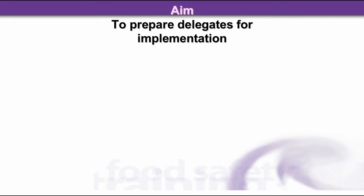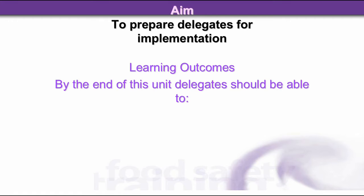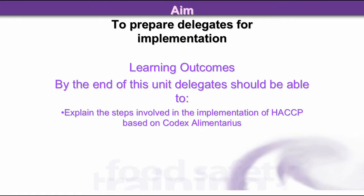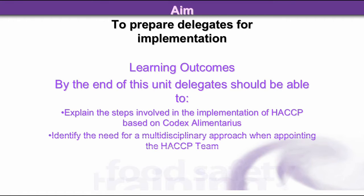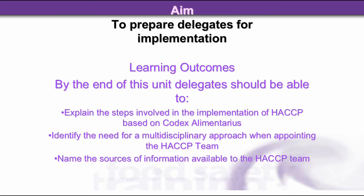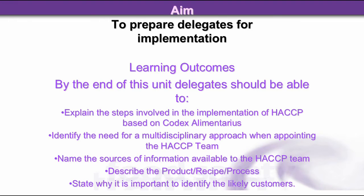The aim of Module 5 is to prepare delegates for implementation of HACCP. By the end of this unit, delegates will be able to explain the steps involved in the implementation of HACCP based on Codex Alimentarius — that group of experts who sit in various parts of the world to discuss food safety issues — and identify the need for a multidisciplinary approach when appointing the HACCP team. They will also be able to name the sources of information available to the HACCP team, describe the product, recipe, and process, and state why it's important to identify the likely customers.